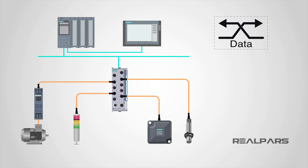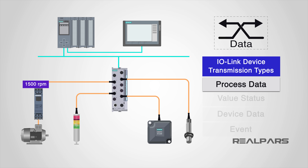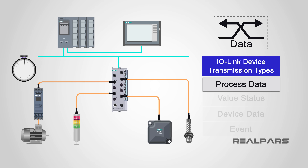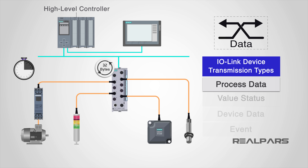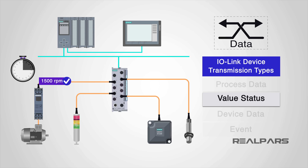An IO-Link device has four types of transmission: process data, value status, device data, and events. The process data is considered as the latest state of the sensor or actuator, such as speed. Process data is transmitted cyclically, which means automatically at regular defined intervals. Up to 32 bytes of process data can be processed, and it is defined by the high-level controller. The value status indicates whether the process data is valid or invalid and is transmitted along with the process data cyclically.